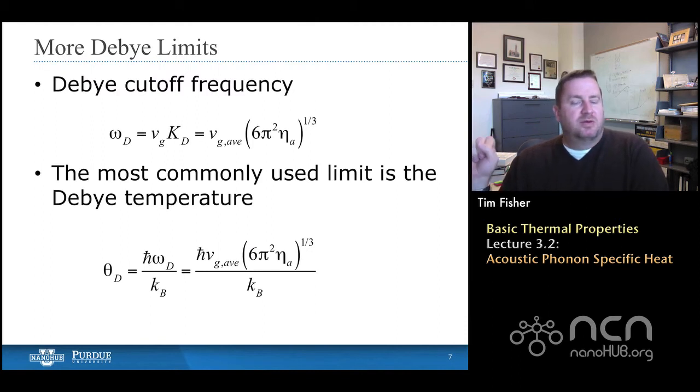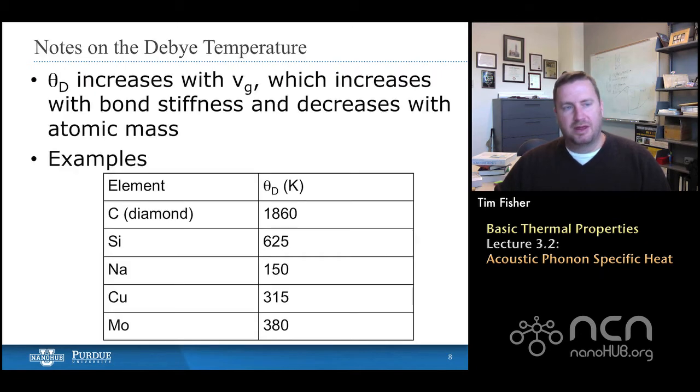So we have the Debye wave vector defined, and you'll actually rarely hear it used. In fact, most of the time, the cutoff frequency, omega sub d, is used as a surrogate, so that's just taking the wave vector k, the Debye wave vector k sub d, multiplying by the average velocity, and then calculating the Debye cutoff frequency. And the most commonly used limit is the Debye temperature, which is just the Debye frequency multiplied by reduced Planck's constant divided by kB T. So that's what you'll see tabulated most of the time. And I've expressed all of the different substitutions here, so you can calculate a Debye temperature by knowing the average group velocity that you've used in your Debye approximation, and essentially the number density of unit cells or atoms in the substance.